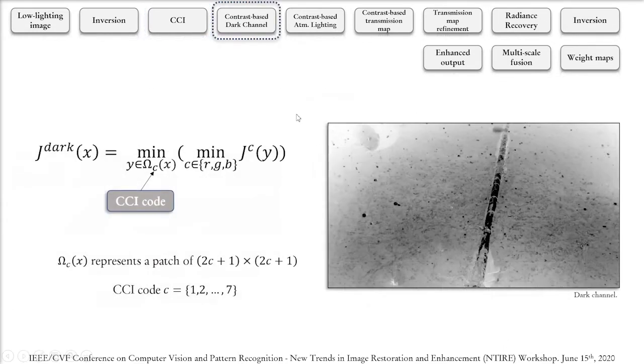The contrast-based dark channel can be calculated by looking at the pixel with the lowest intensity, considering all three color channels, and a patch whose size is determined by code C in a position X. So for a position X, for example, that possesses code C equals 2, we would use a patch size of 5x5 pixels.